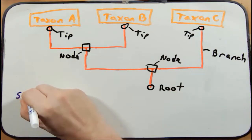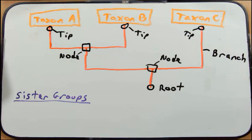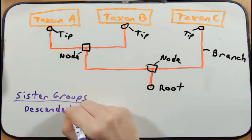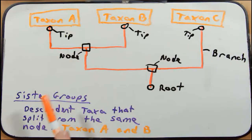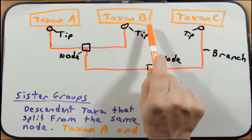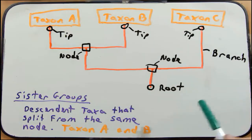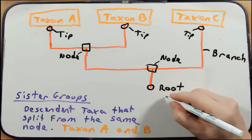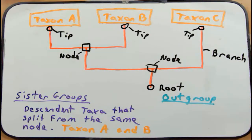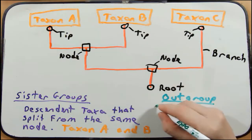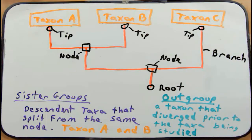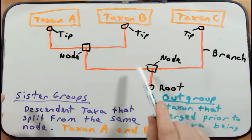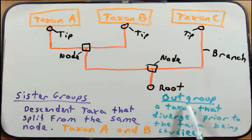I'm going to use this figure to talk about sister groups. Sister groups are descendant taxa that split from the same node. Taxon A and B are a sister group because they both descended from the same node. A and C are not sister groups, and B and C are not sister groups. How would we describe taxon C in relation to A and B? We would say it is an outgroup. An outgroup is a taxon that diverged prior to the taxa that are the focus of the study. The focus is taxon A and B; any taxon not part of that sister group, like taxon C, would be the outgroup.